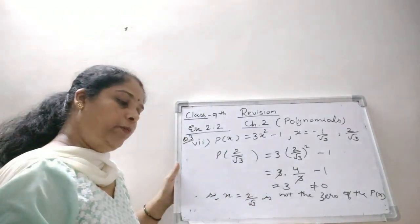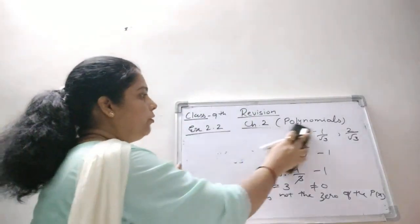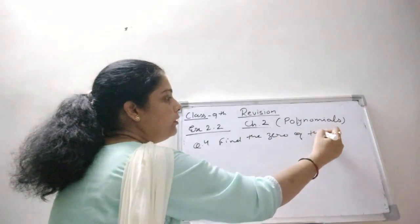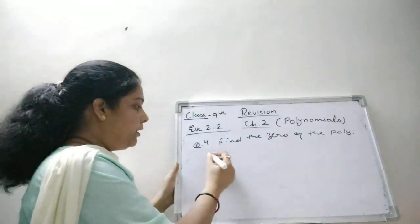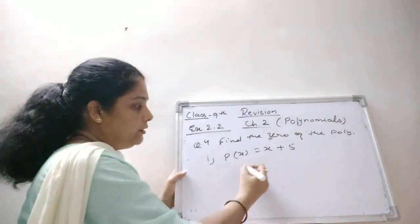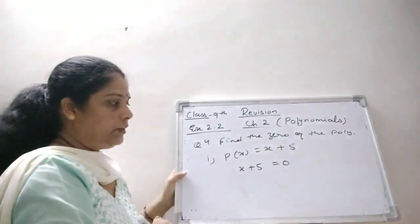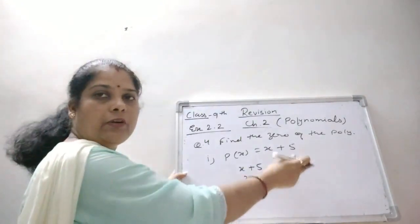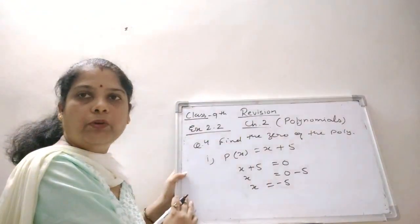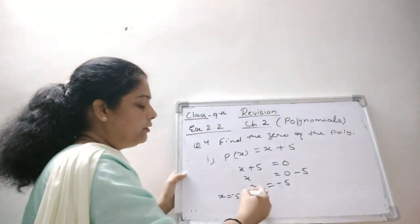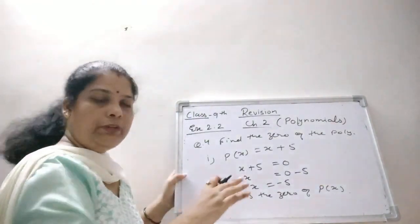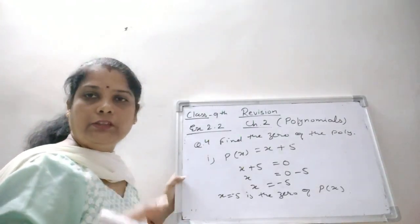Now, question number 4: Find the zero of the polynomial in each of the following cases. First part: P(x) = x + 5. To find the zero, set x + 5 = 0. Bringing 5 to the right-hand side gives x = minus 5. So x = minus 5 is the zero of the given polynomial. The zero of a polynomial can also be called the root or the solution of the polynomial.